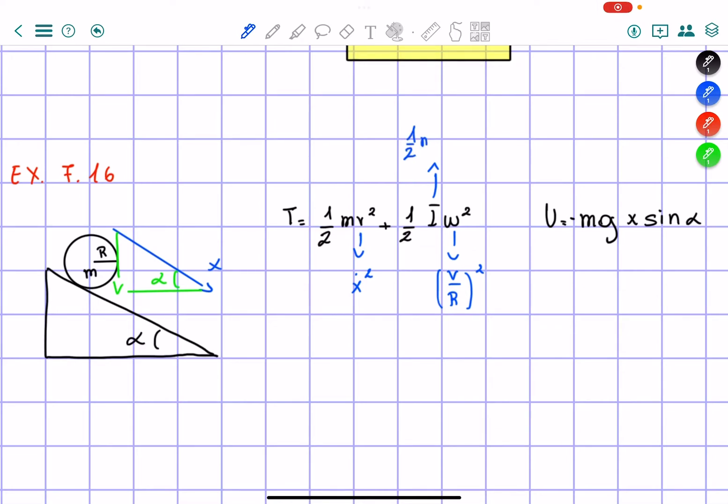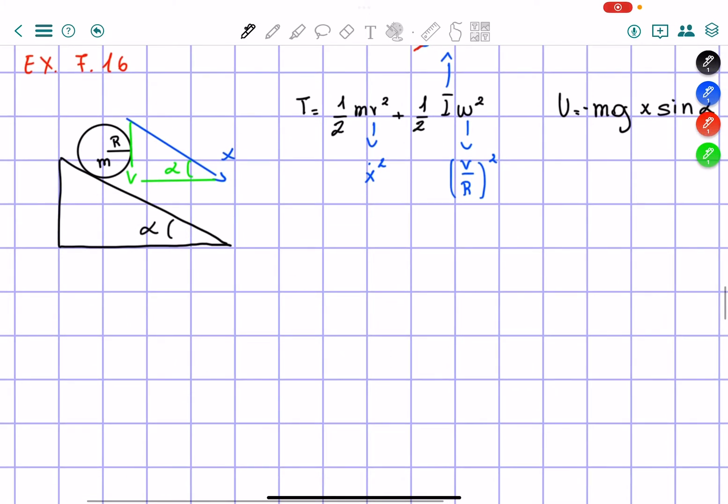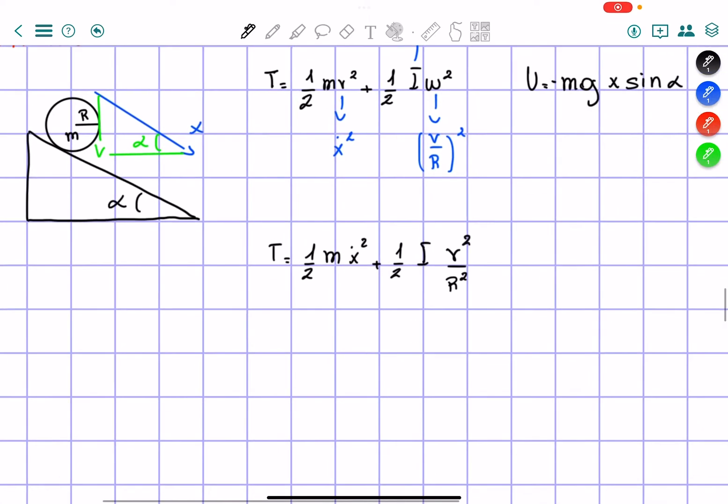In our case, we should probably not specify it because we don't know if the cylinder is hollow or it's a solid cylinder. So we're just going to leave I as I. So we're going to have T equals 1/2 m x dot squared plus 1/2 I v squared over R squared. And U is the same thing of course.